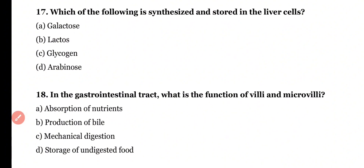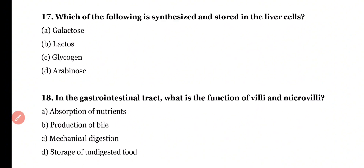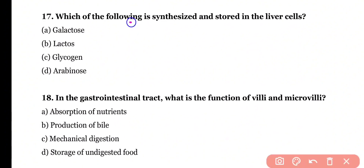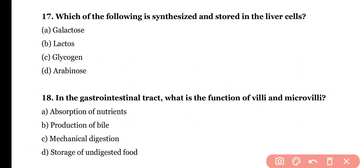Question 17. Which of the following is synthesized and stored in the liver cell? Galactose, lactose, glycogen, or arabinose? Correct answer is option C. Glycogen is mainly synthesized and stored in liver cells. In addition to liver cells, glycogen is also stored in muscle cells.